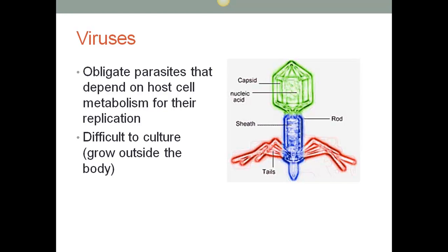Viruses range in size from 17 to 300 millimicrons in diameter, and although virions like bacteria can have different shapes, a fairly typical picture is shown on the slide. Viruses need a living host cell — a viral culture must be cultured within living cells. Sometimes you'll see a blood agar, which is a special container with living cells. These are difficult to grow outside the body, as they attach to a cell for nutrients.